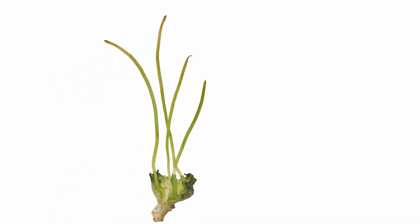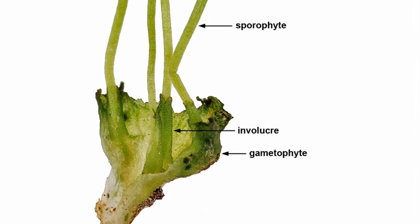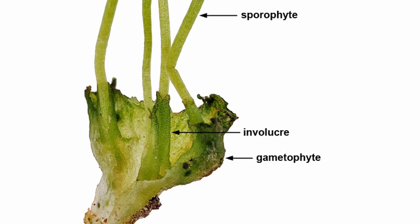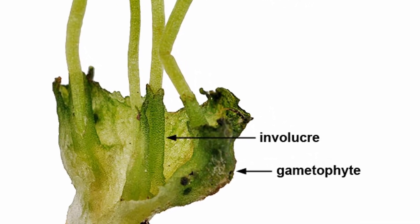Anthoceros plant body can be morphologically differentiated into thaloid gametophyte and elongated spindle shaped sporophyte or sporogonium. Sporophyte usually grows in clusters from the upper surface of the thalus, each surrounded at its base by a tubular involucre.